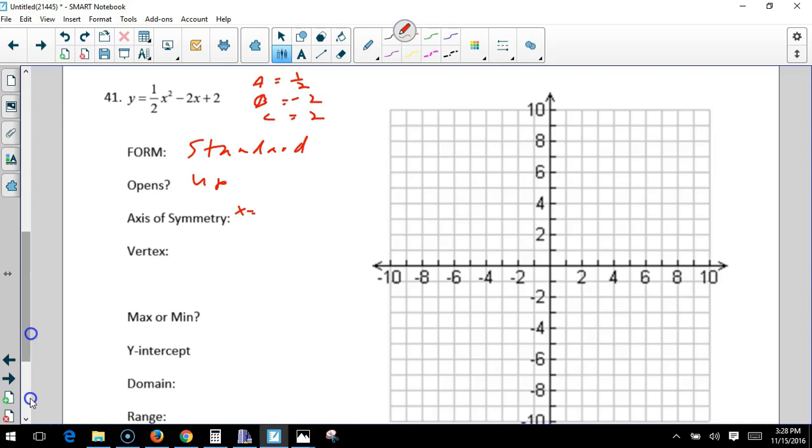The axis of symmetry equals the opposite of B over 2 times 1 half. So the opposite of negative 2 is positive 2. 2 times 1 half is 1, so that's 2. S equals 2.